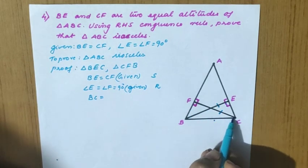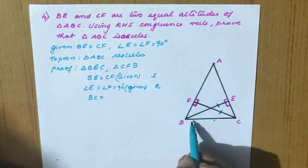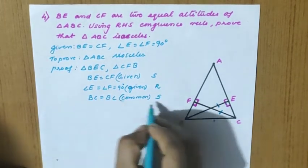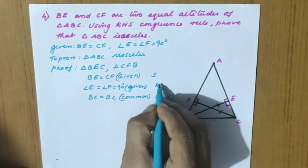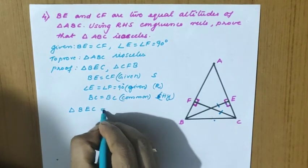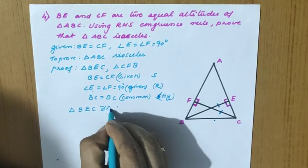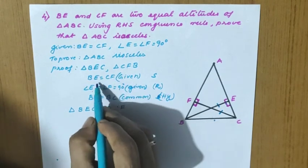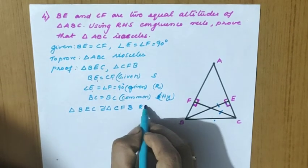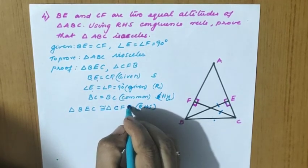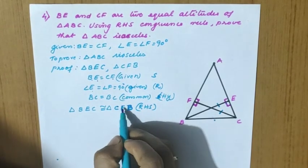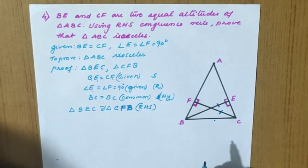For triangle BEC: side BE is taken, angle E is 90, so the opposite side — BC — is the hypotenuse. For triangle CFB: side CF is taken, angle F is 90, so the opposite side is again BC. Therefore BC equal to BC is common. We have right angle, hypotenuse, and side — so triangle BEC is congruent to triangle CFB by RHS criteria.